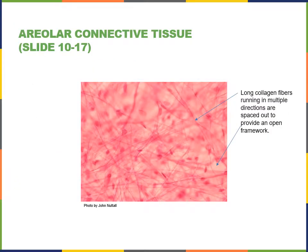Areolar connective tissue is a type of connective tissue proper. It has a matrix with a fluid gel ground substance, and contains collagen fibers, reticular fibers, and elastic fibers — all three of the major fiber types are found in areolar connective tissue.